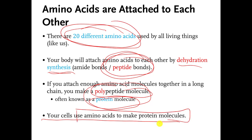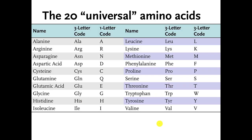Now I'm going to show you the 20 universal amino acids, or at least their names. Here they are. They are listed alphabetically, starting with alanine, arginine, and so on, all the way down. Number 20 is valine if you list them alphabetically.